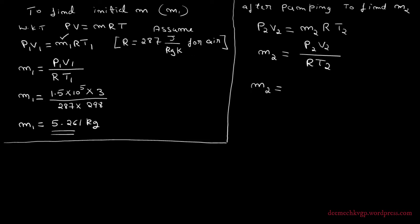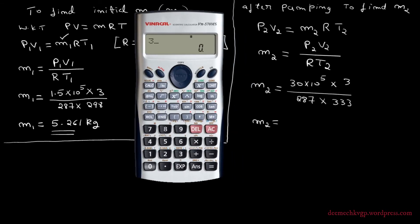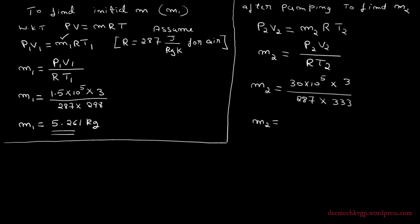Calculating M2: M2 = (30 × 10⁵ × 3) / (287 × 333). Computing the numerator and dividing by the denominator gives M2 = 94.170 kg. This is the total mass of air in the container after pumping.